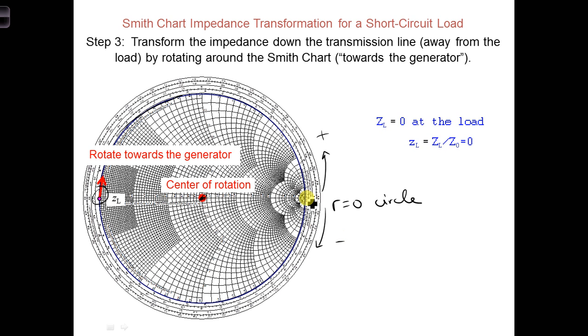Then, when we get to infinity and keep rotating, we start rotating through negative values. We notice the values start to repeat as we move away from the load. At what distance from the load do the values start to repeat?